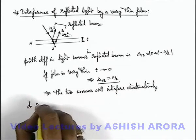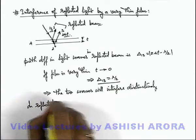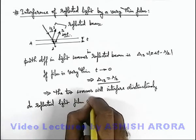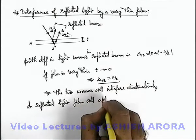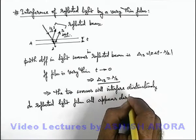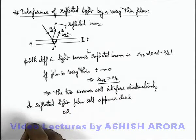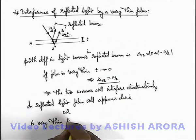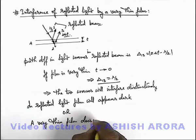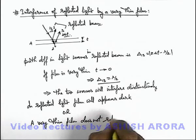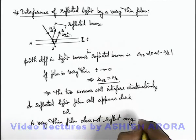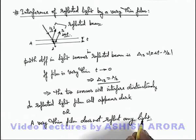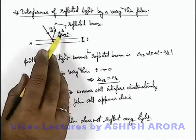In reflected light, the film will appear dark. Or we can write that a very thin film does not reflect any light. We are assuming that the light beams 1 and 3 will have approximately the same intensities.